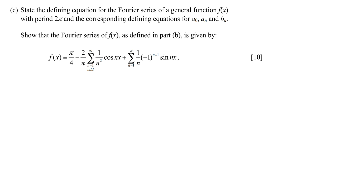The first part of this question wants us to state the defining equations for a Fourier series for a function f of x, which has a period of 2π. We need to look at the equations given at the start of the question. These are given for a general period L, and we simply need to convert from period L to period 2π. Wherever we see an L, we just replace it with 2π.